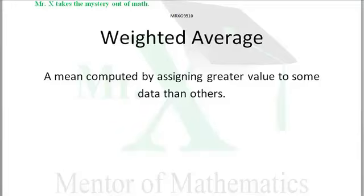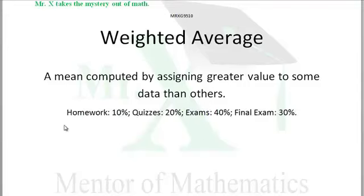Suppose for example that your teacher assigned these different weights to your grade, your semester math grade. Your math teacher says your homework will count for 10% of your grade. Your quizzes as you go through the semester will count for 20% of your grade. Your exams, except for the final exam, will count for 40% of your grade. And then the final exam itself will be worth 30% of your grade. Well this is a way of weighting certain parts of your work, of your study, from homework to quizzes and exams, to compute a weighted average.